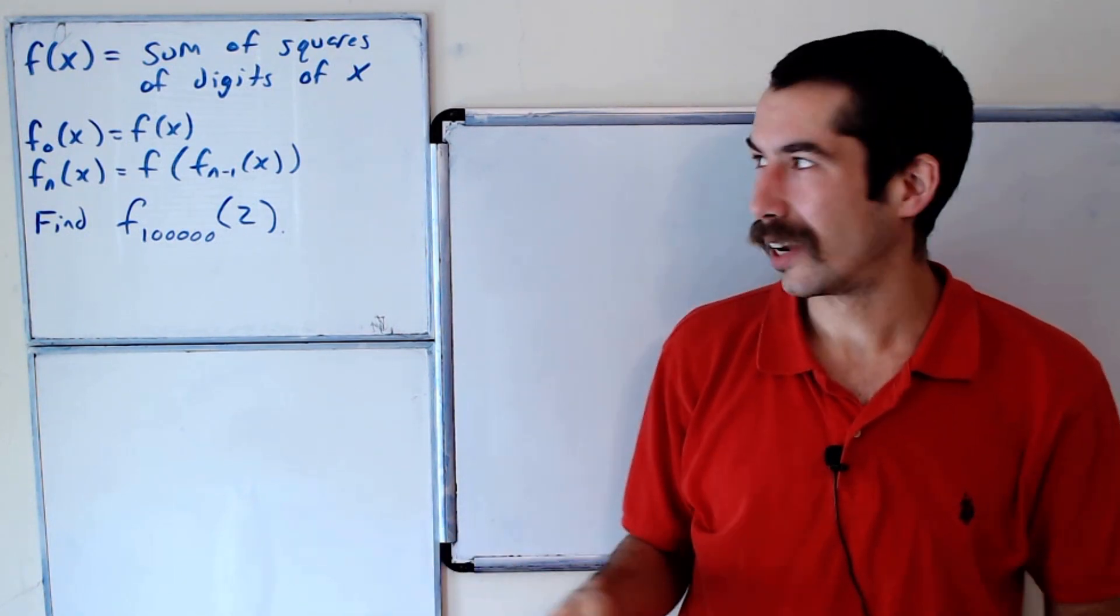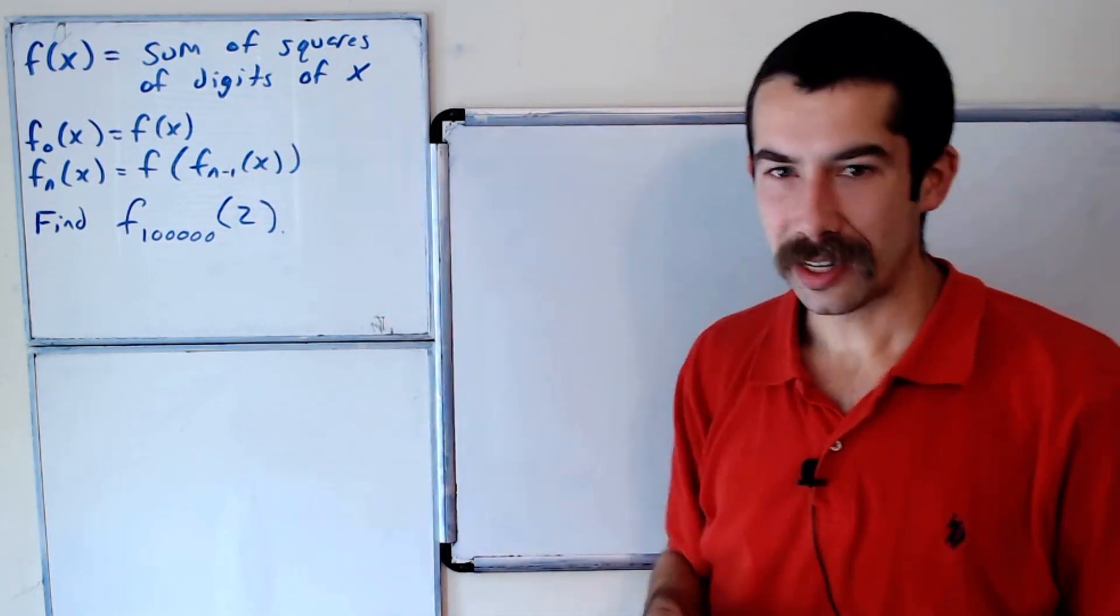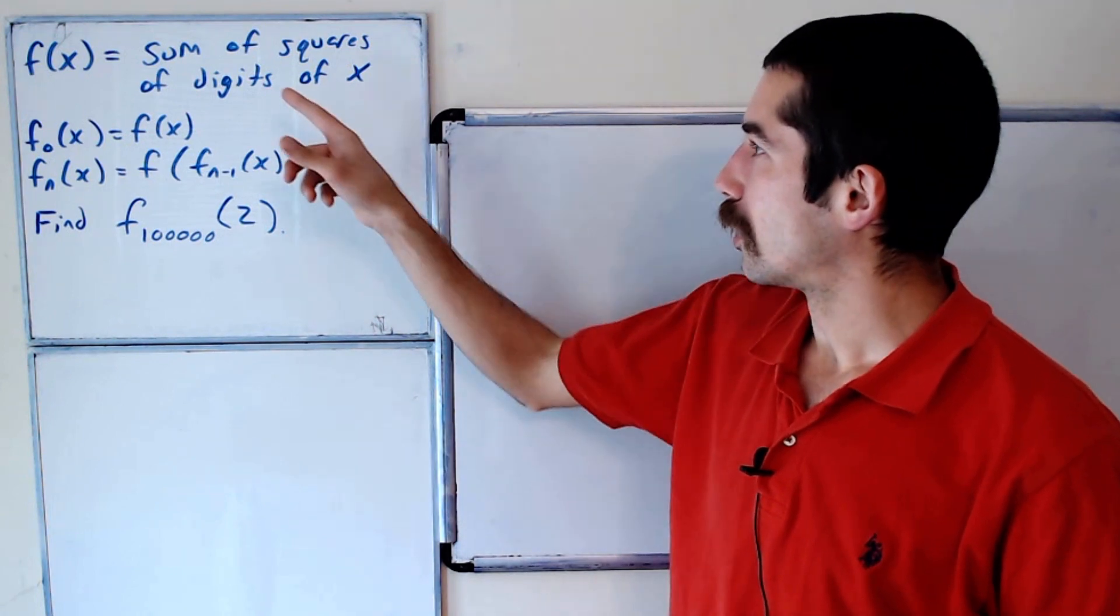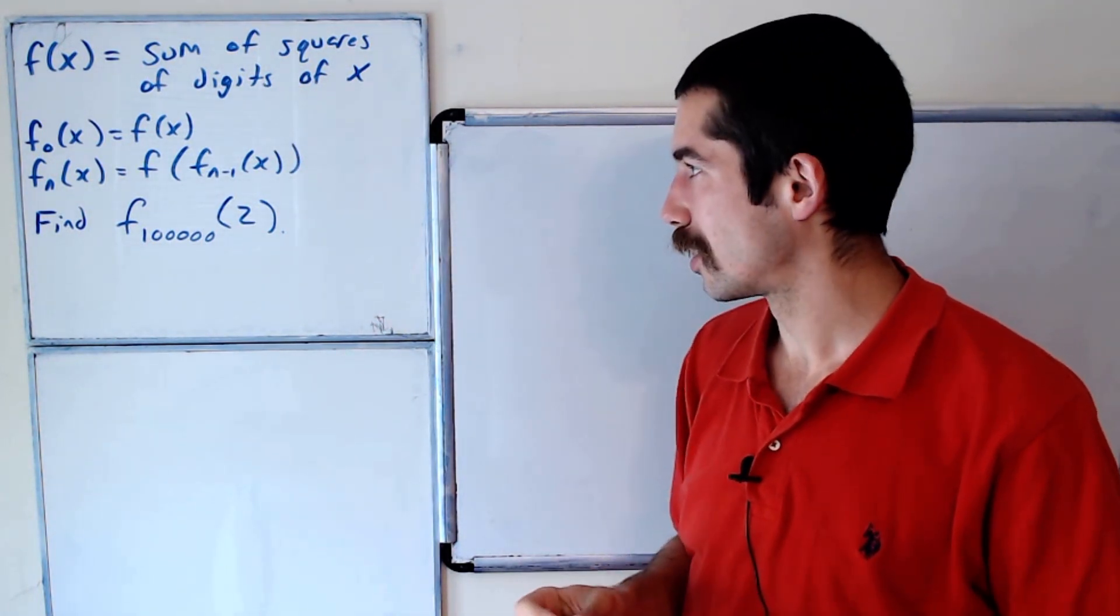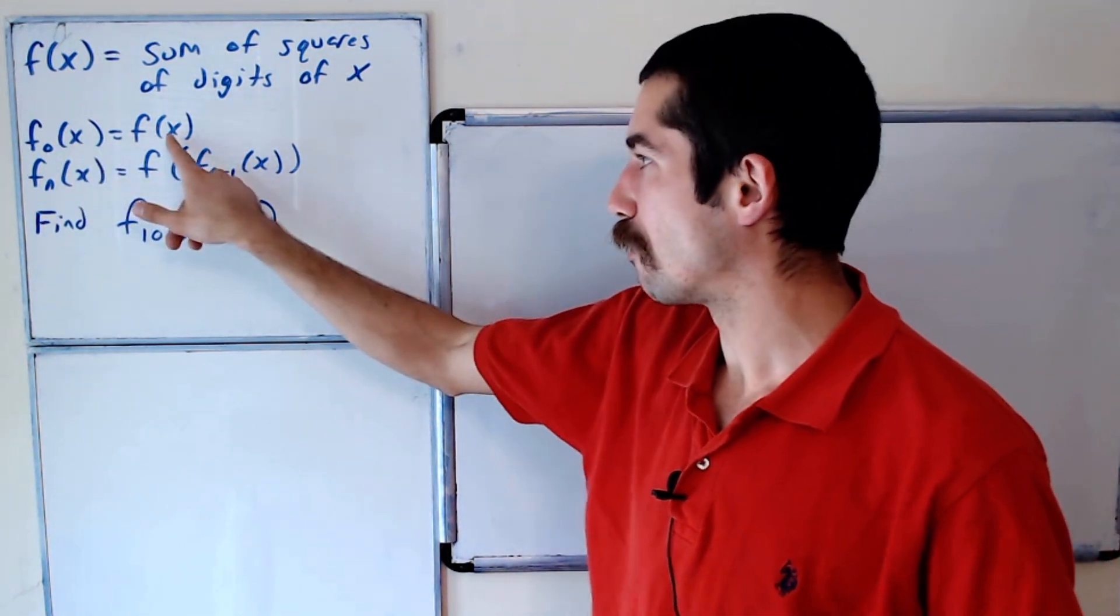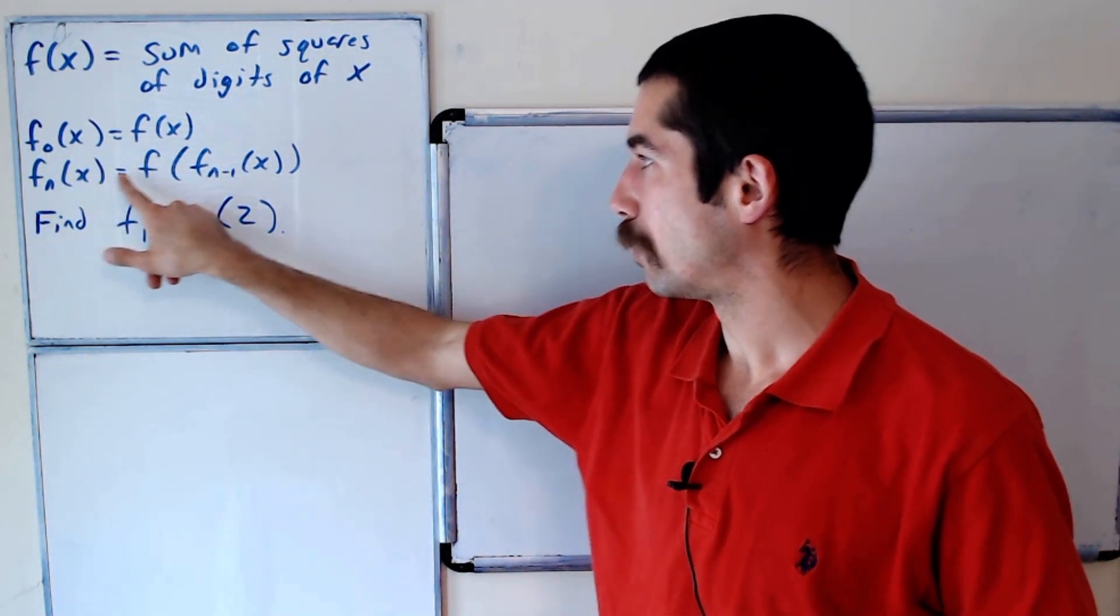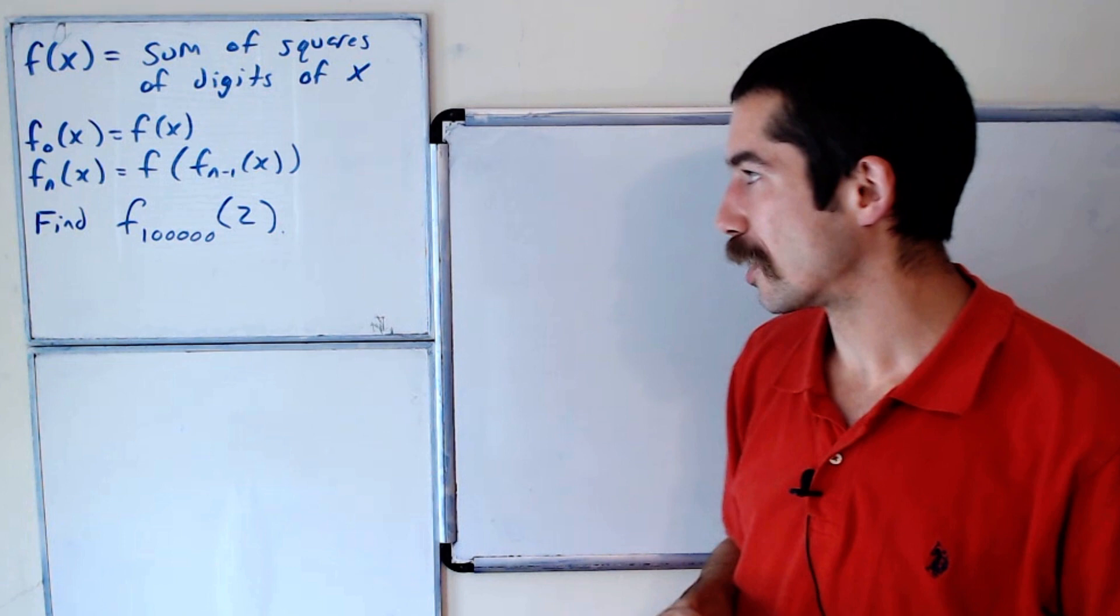I got a quick puzzle for you today. Let f(x) be the function that is the sum of the squares of the digits of x, and we'll let f_0 be f(x) and f_n be f composed with f_(n-1).